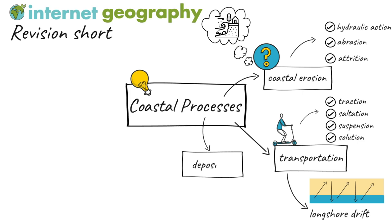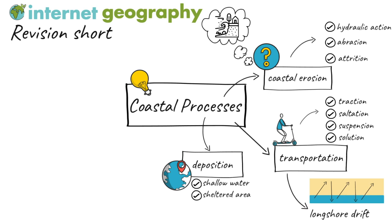Coastal deposition involves material being transported by the sea being dropped when waves lose energy. This can occur in shallow water, in sheltered areas such as bays, where a river flows into the sea, reducing wave energy, and when there is little wind, also reducing wave energy.